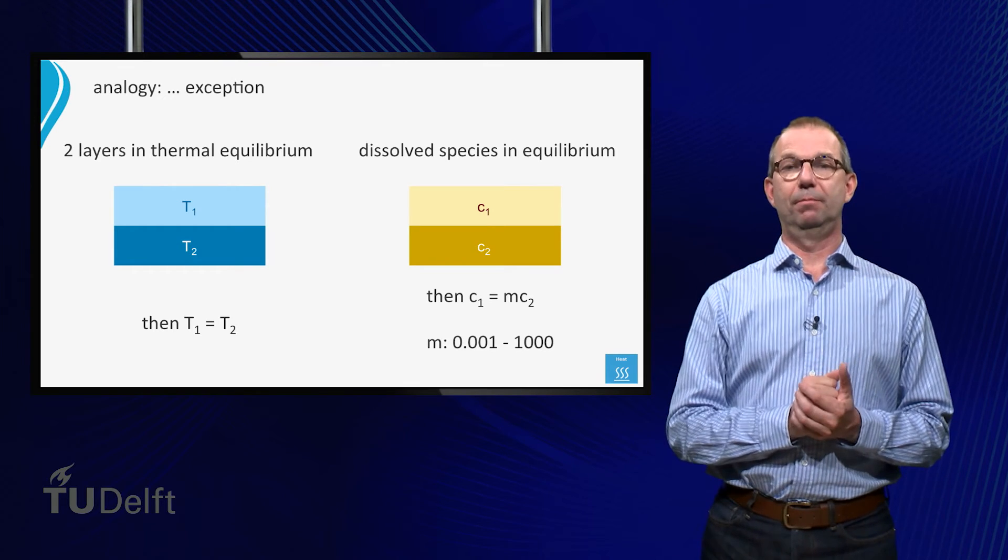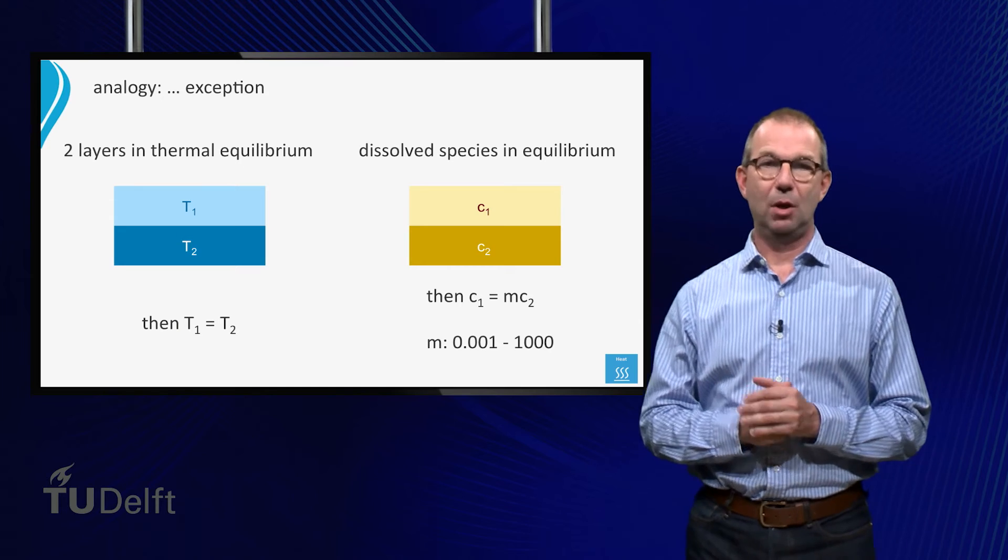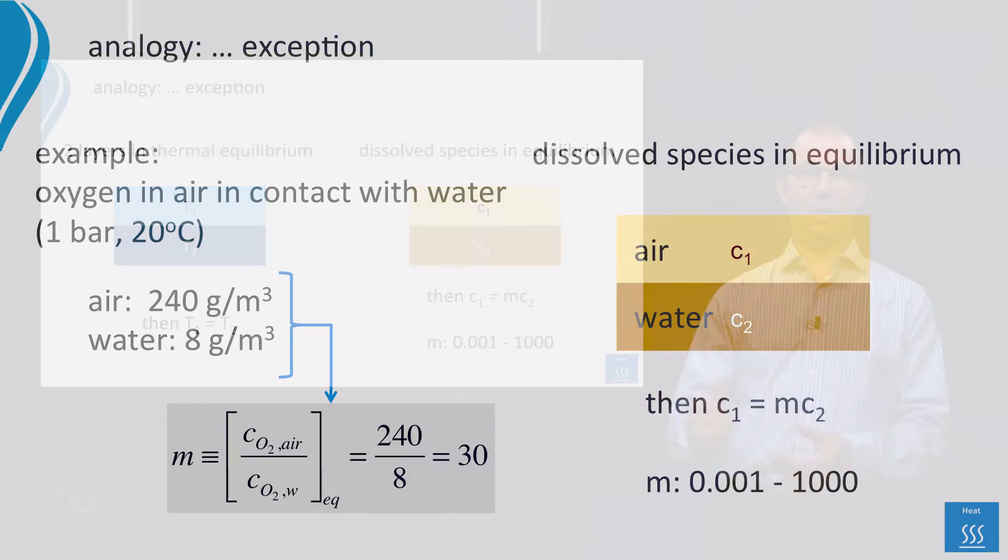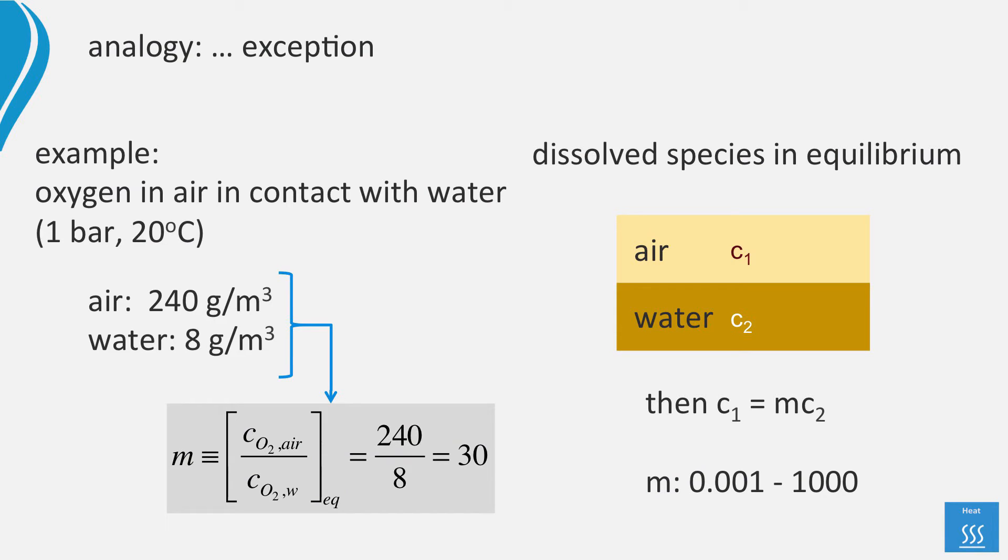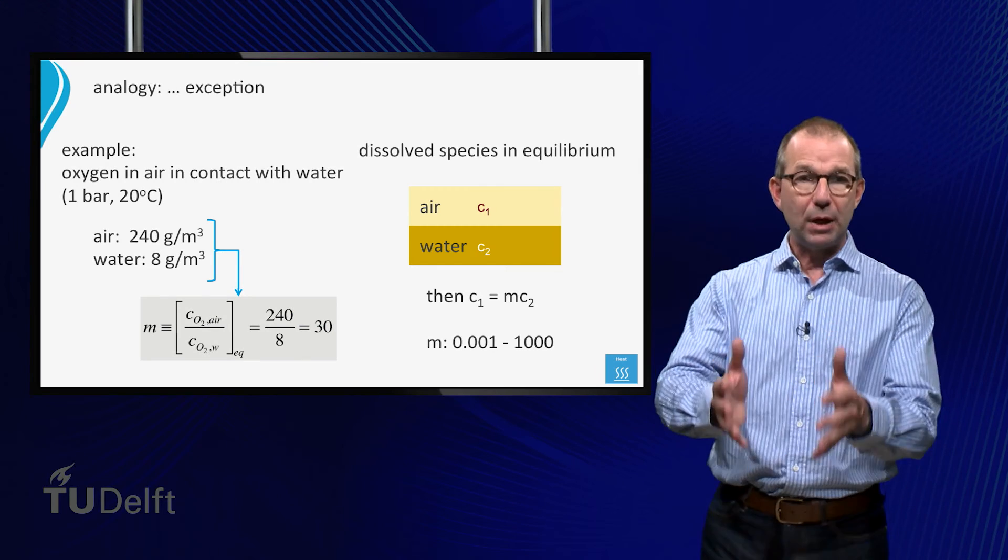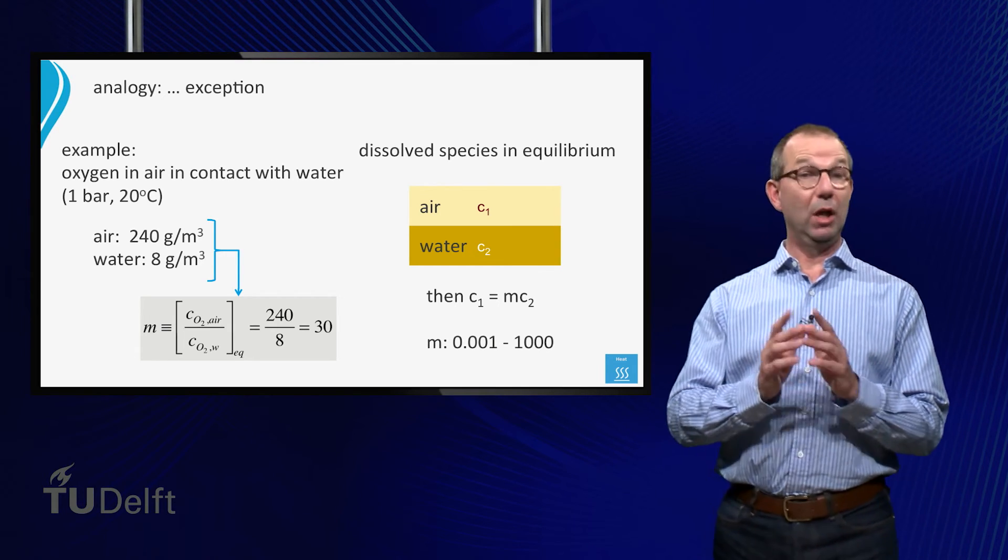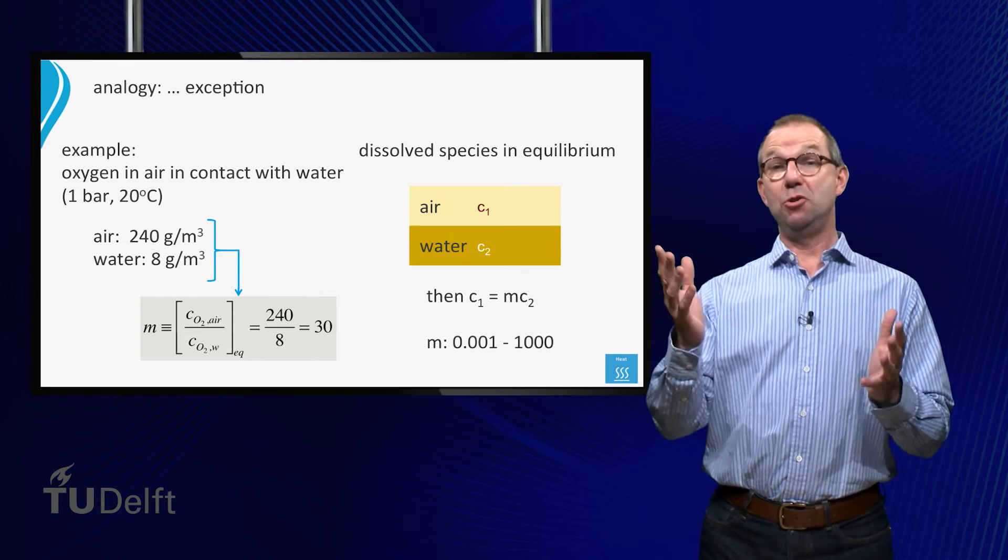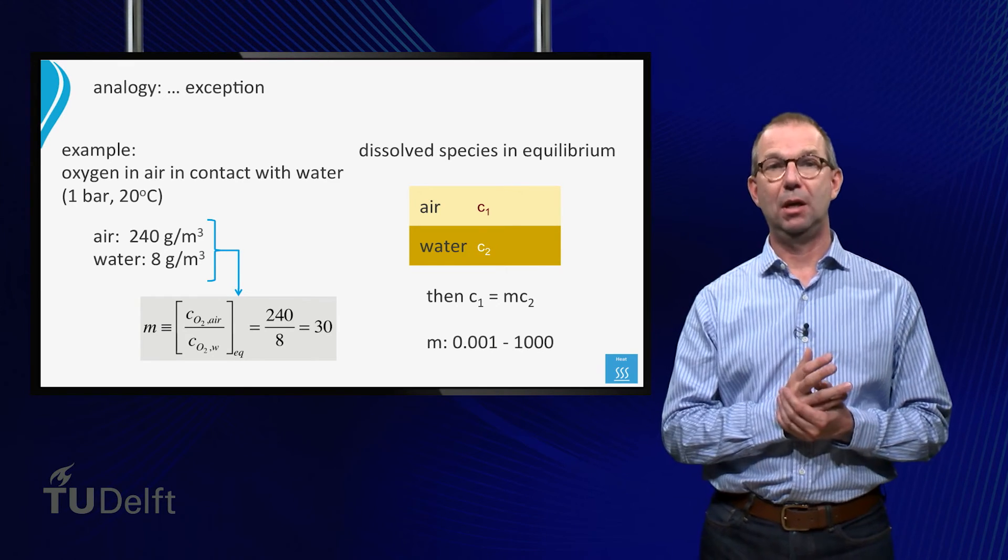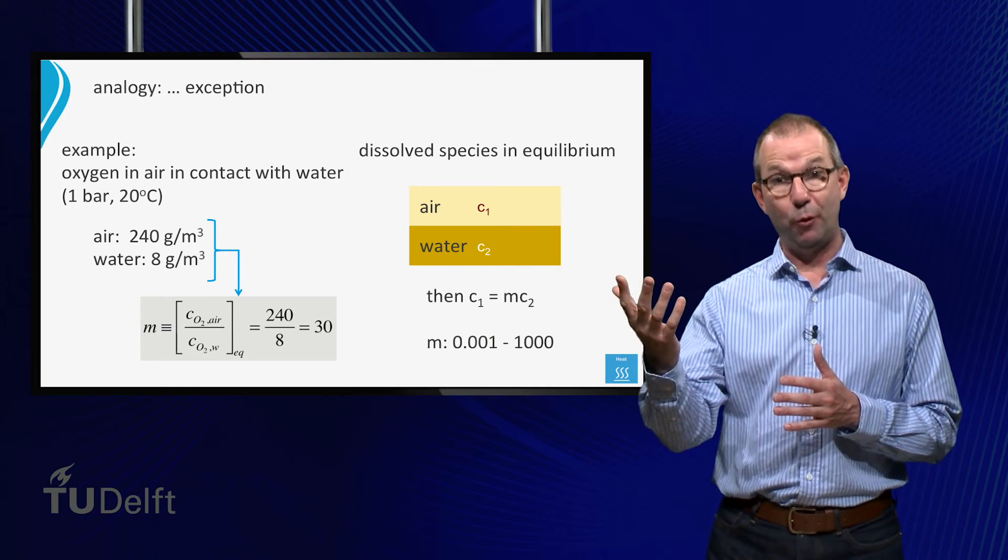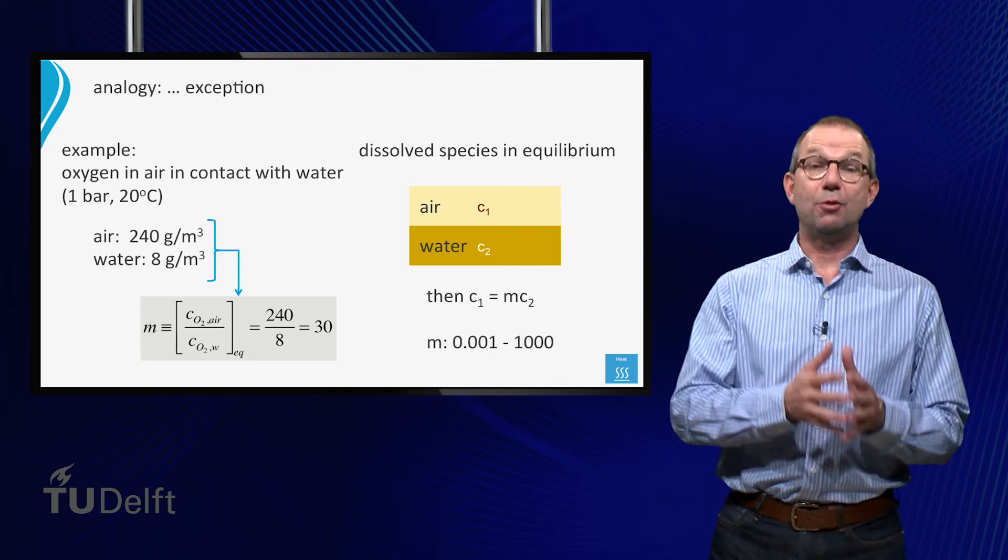But remember this exception. Let us look at a daily life example, water and air with in it, oxygen. We do know that about 20% of the air is oxygen. The remainder is by and large nitrogen. For air at 20 degrees and one bar, this means that it contains 240 grams of oxygen per cubic meter. Put a glass of water, fresh water, on your desk and wait. After a while, the water in your glass will be in equilibrium with the air. That is, no more oxygen will diffuse into or out of the water. If you would measure the oxygen concentration in your water, you would find that it only contains 8 grams of oxygen per cubic meter of water, thus much less than in the air.